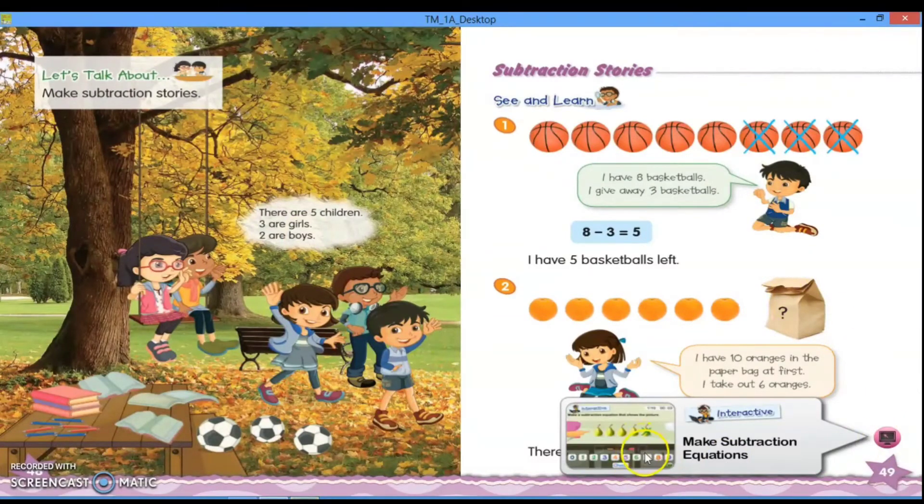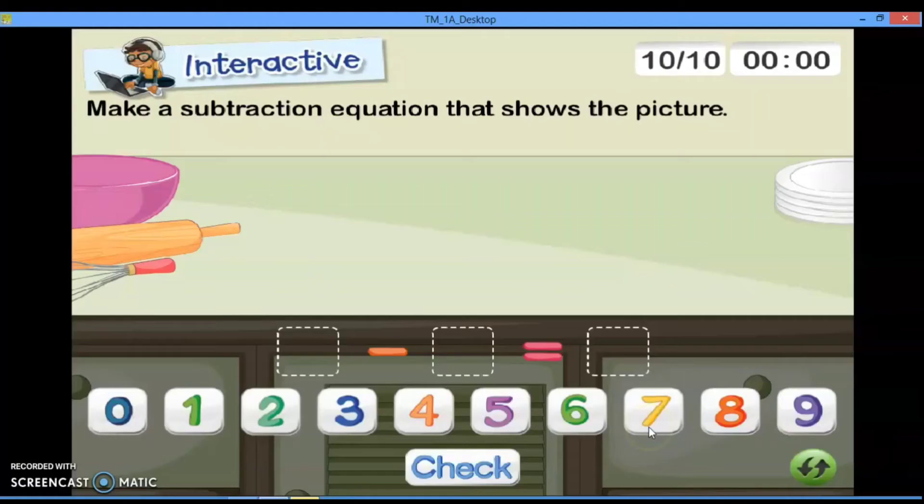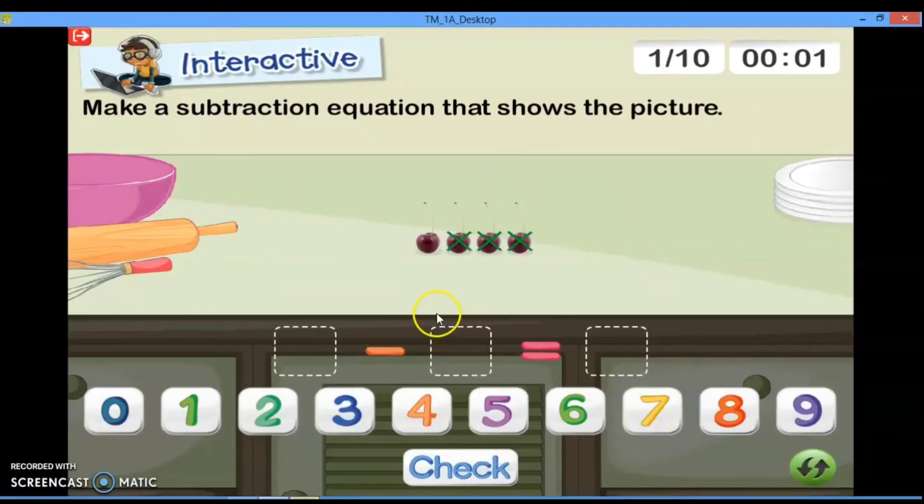Nah di sini, miss punya permainan make subtraction equation. Nah teman-teman, di sini teman-teman bisa melihat ya. Ada empat ceri. Maka, kita pilih terlebih dahulu angka empat. Kita cari four. Okay, kita pindahkan ke sini.